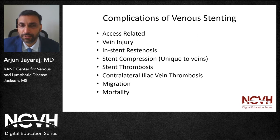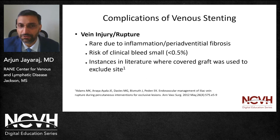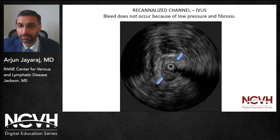A few words on complications of venous stenting. Access-related complications are similar to what one would encounter with arterial access: hematomas, pseudoaneurysms, AV fistulas, treated in pretty much the same way. As far as venous injury goes, free rupture is extraordinarily rare because of the low pressure as well as the intense inflammation and peri-adventitial fibrosis that occur around these veins. However, there are instances in the literature where covered grafts have been used to exclude a site of rupture. This is an example of why free rupture seldom occurs — you'll notice the extensive fibrosis around the vein which has an IVUS catheter in place.